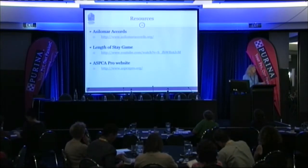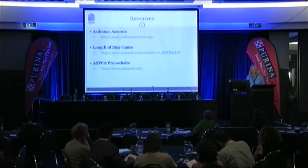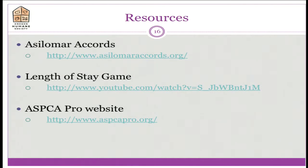For your resources, I urge you to participate in the Asilomar Accords — look it up, it's really comprehensive, and I'm happy to help talk anyone through incorporating it into your organization and as a coalition. The National Federation of Humane Societies has a simple matrix — about six or eight categories, what did you get and what did you do with it — so we can start talking as a community about the scope of the problem, where animals are coming from, where they're going, and how we're going to get to zero.